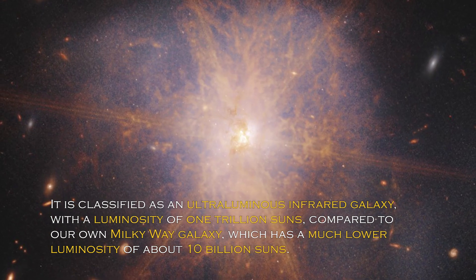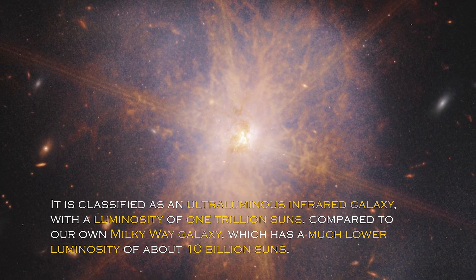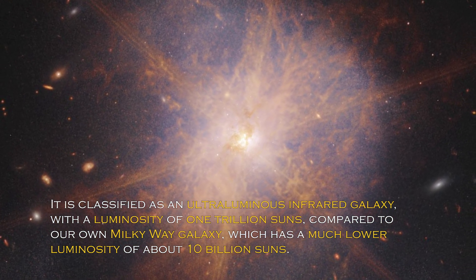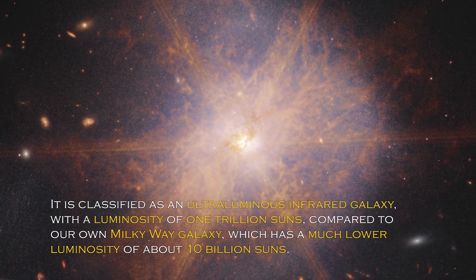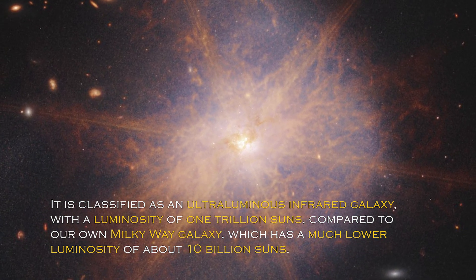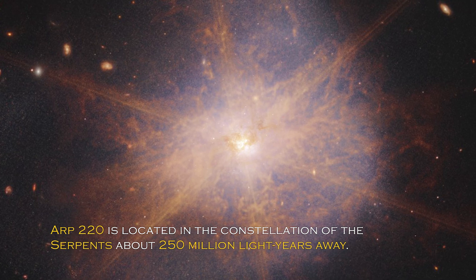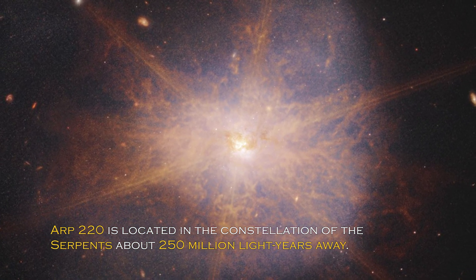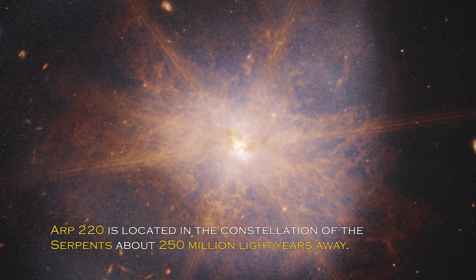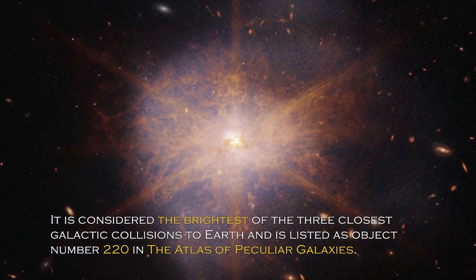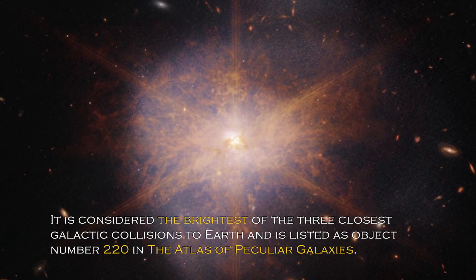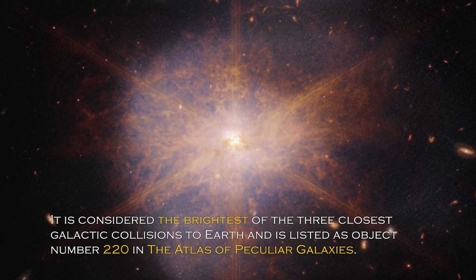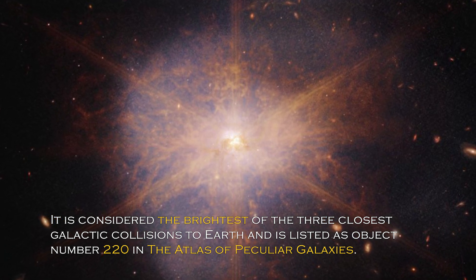It is classified as an ultra-luminous infrared galaxy, with a luminosity of one trillion suns compared to our own galaxy, the Milky Way, which has much lower luminosity of about 10 billion suns. ARP 220 is located in the constellation of Serpens, about 250 million light-years away. It is considered the brightest of the three closest galactic collisions to Earth.